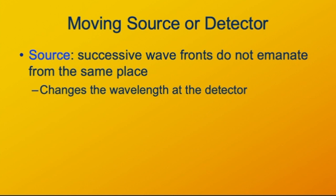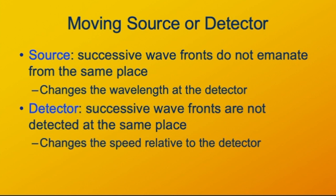By the same token, if the source is moving away from the detector, it'll have a longer wavelength and a lower frequency. Effectively, the wave speed is faster than otherwise. Because the wave speed depends on wavelength and frequency, changing the wavelength or changing the wave speed is going to change the frequency.